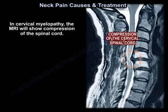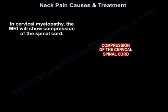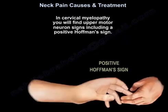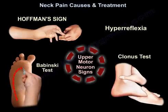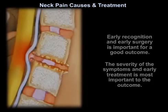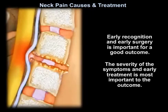In cervical myelopathy, you will find upper motor neuron signs, including a positive Hoffmann sign. Other upper motor neuron signs include hyperreflexia, a positive Babinski test, and Clonus test. Early recognition and early surgery is important for a good outcome. The severity of symptoms and early treatment are most important to the outcome.